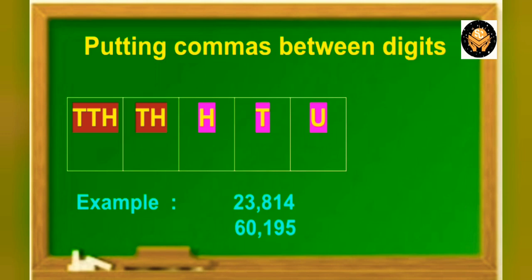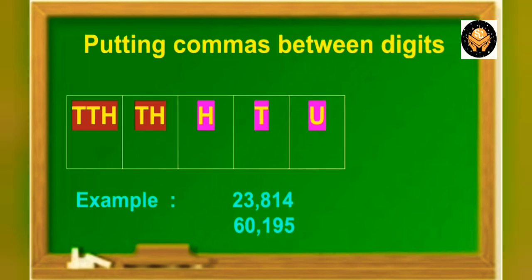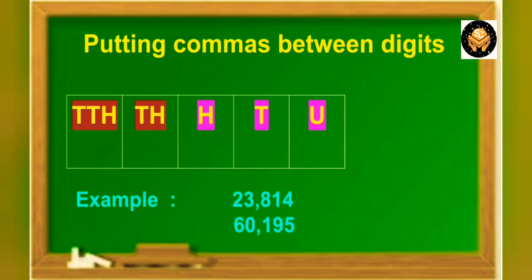To make reading and writing of numbers easy, it is good to put commas between the digits. For this, we make 2 groups: the first group is of the 100s, 10s and units place, and the second group is of the 10,000s and 1000s place. Then put a comma after the 1000s place. For example, 23,840 — here I have put a comma after the 1000s place. Similarly, in the second example, 60,195 — I have put a comma after the 1000s place, that is after the 0.